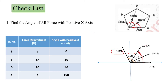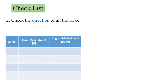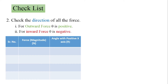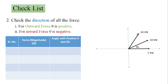The second step is to check the direction of all forces — whether each force is outward or inward. If the force is outward, theta is positive; if inward, theta is negative. For 7 kilonewton: outward, so theta is positive. For 10 kilonewton: outward, positive. The next 10 kilonewton: outward, positive. And 3 kilonewton: outward, so theta is also positive.